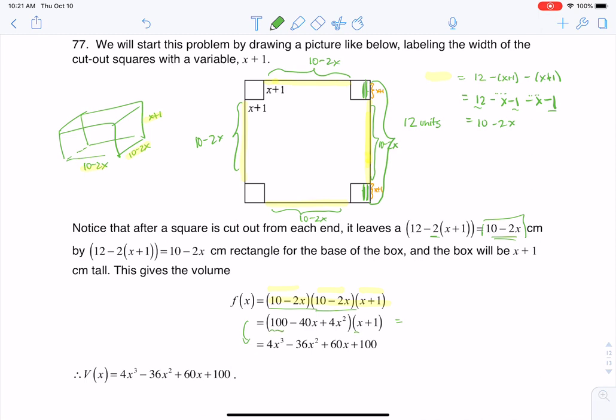So I have to distribute the 100 to the x plus 1 and then distribute the other terms to x plus 1, and when you multiply all of that out and you collect like terms here comes the volume function. So it's a cubic, 4x cubed minus 36x squared plus 60x plus 100. All right thanks so much everyone, bye bye.